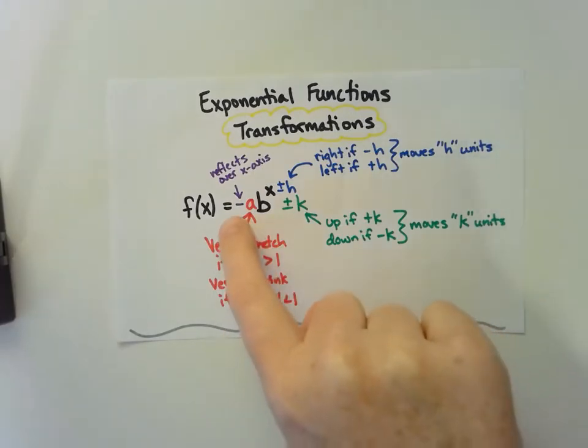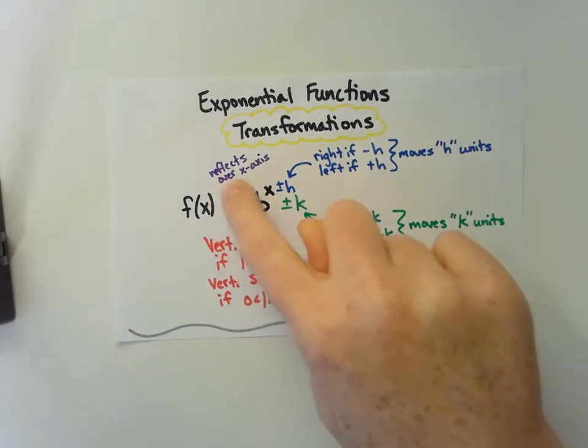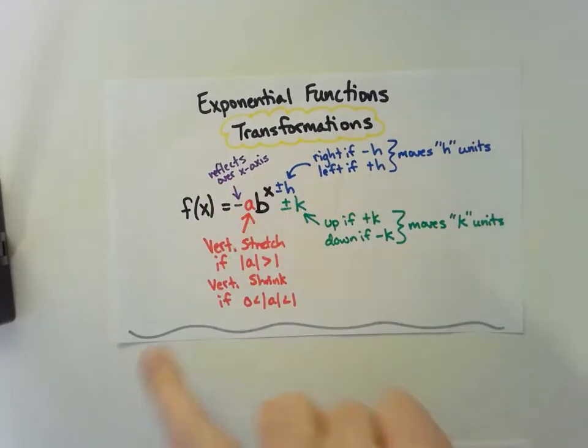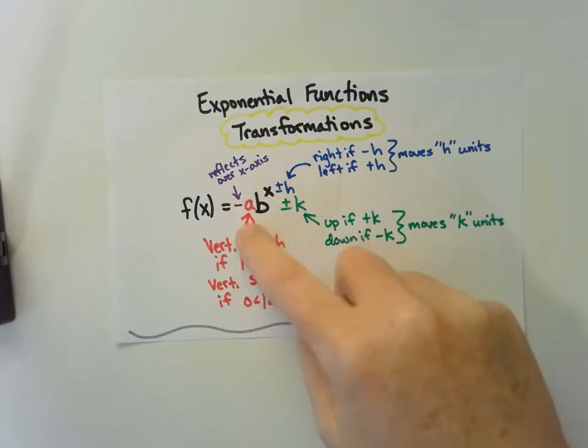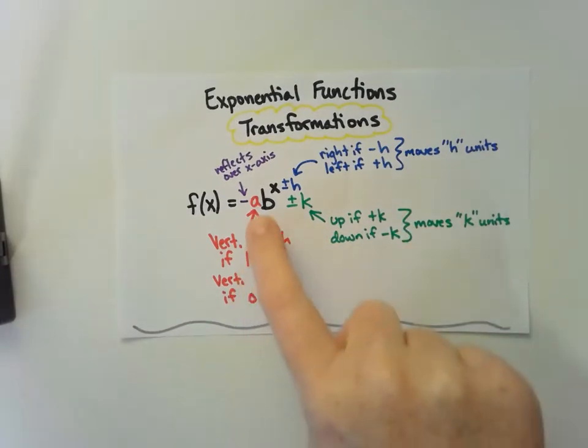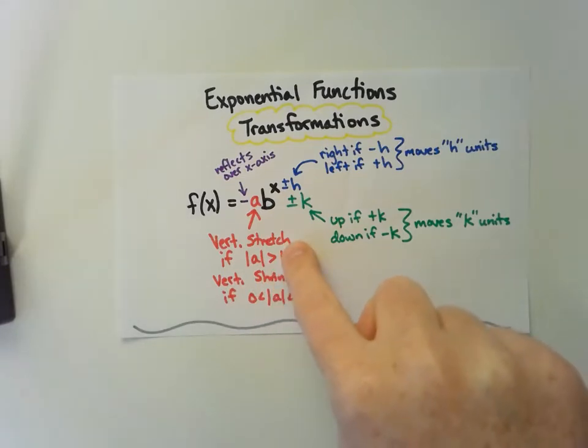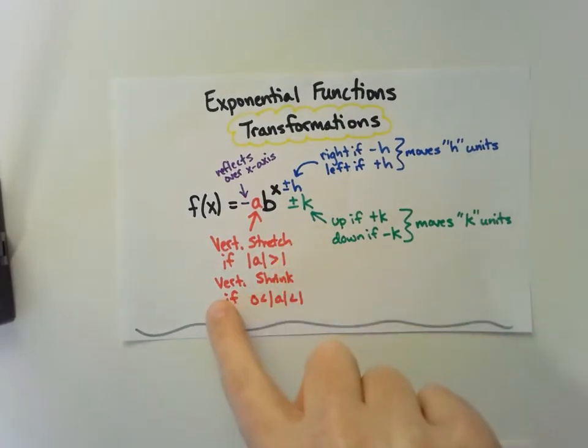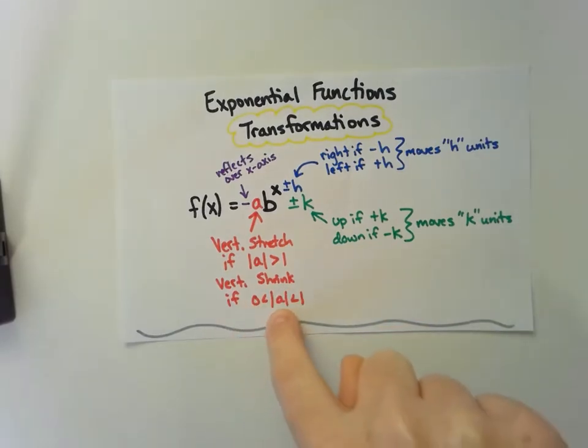If there is a negative in front of our function, it reflects over the x-axis. The number in front of our base would be a vertical stretch or shrink depending on the value. If the absolute value of a is greater than 1, it stretches our function by a factor of a. If the absolute value of a is between 0 and 1, like one-half for example, it's a vertical shrink.